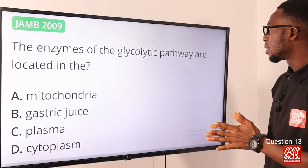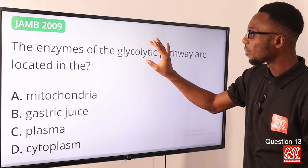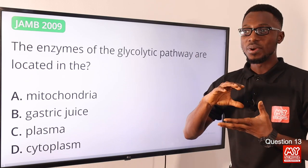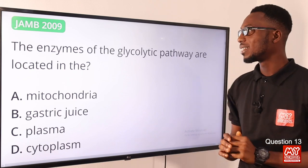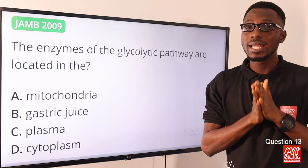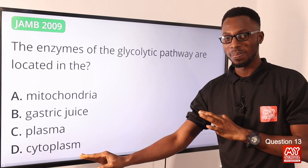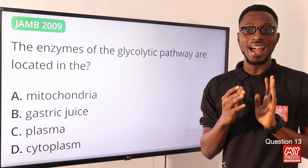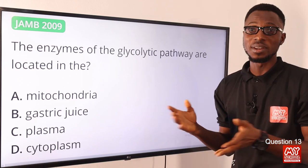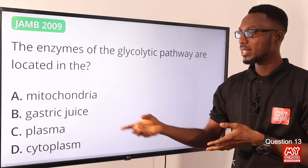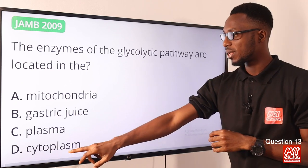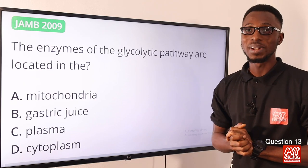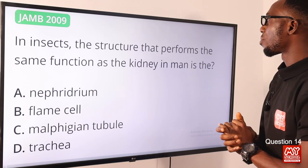Question thirteen: the enzymes of the glycolytic pathway are located where? Glycolysis is the metabolic pathway where glucose is broken down or converted to pyruvic acid. It does not require oxygen and is carried out by enzymes located in the cytoplasm of the cell. The pyruvic acid is then completely oxidized to CO2 and water in the mitochondria — that is the Krebs cycle. The correct option is option D — cytoplasm.